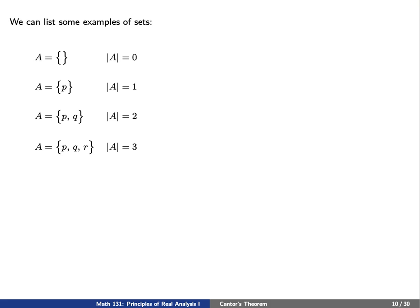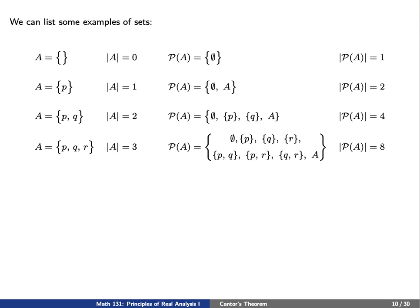Now let's consider the power set of these sets. The power set, denoted by script P of A, is the collection of subsets of our set. Well, if A is the empty set, it only has one subset, namely itself. So we'll let P(A) be the set consisting of the empty set. This only has one element, namely the empty set itself.